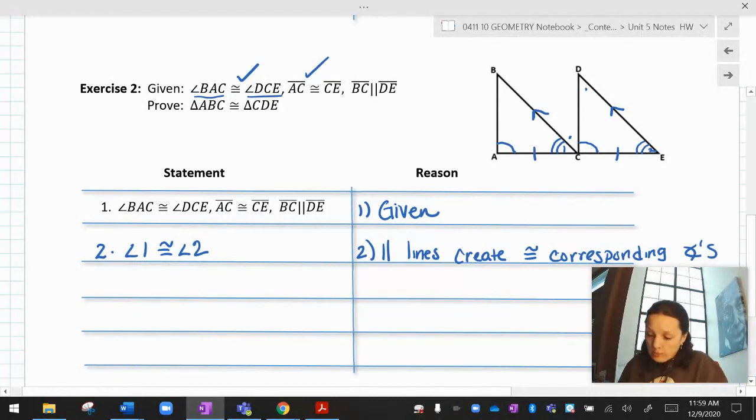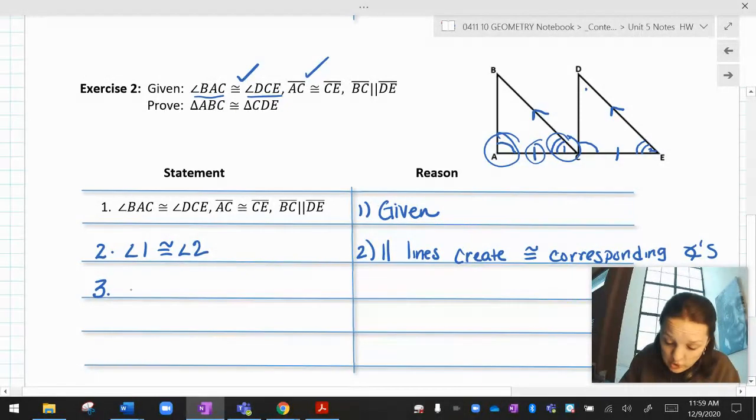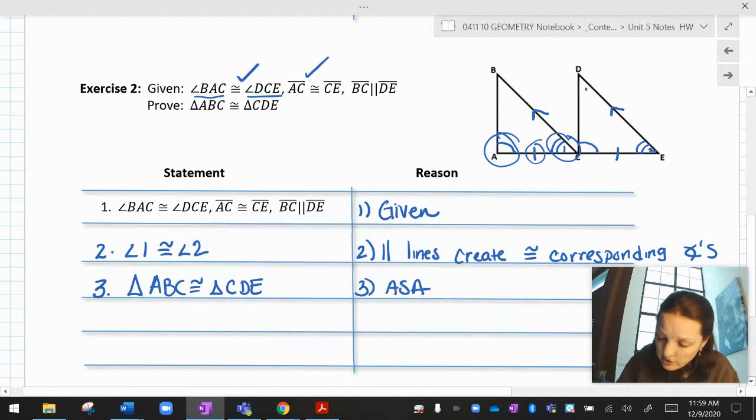Okay. Cool. Oh, and if I look at those triangles now, I see A, S, A. I have A, S, A marked. That means I'm done. That means that I can just say after one new step, ABC is congruent to CDE by ASA congruence.